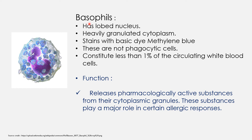Now we will go through the options in the question one by one. The first option is basophil. This is an image of basophil — it has a lobed nucleus, and blue-colored granules are shown; the cytoplasm is granulated. It stains with the basic dye methylene blue, which is why it is named basophil. These are non-phagocytic cells.